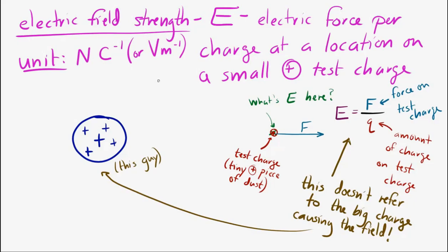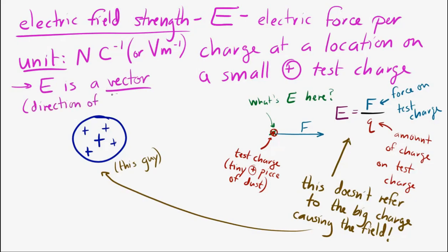The electric field is a vector — it has a direction. The electric field direction is always the same as the direction of the force on a positive charge at that point.